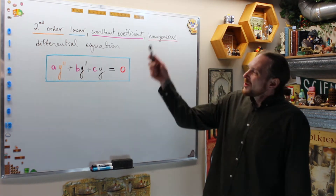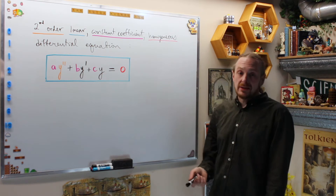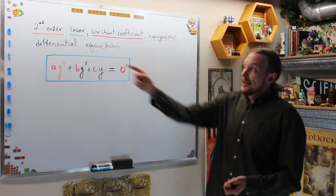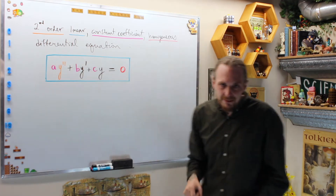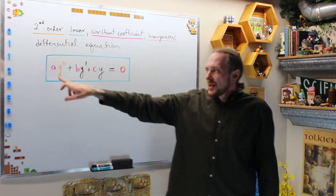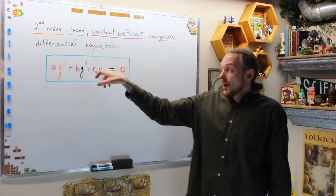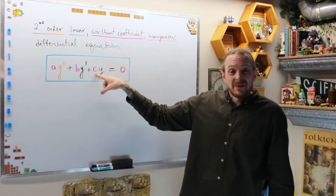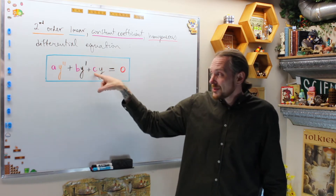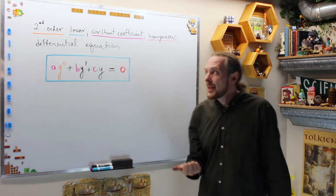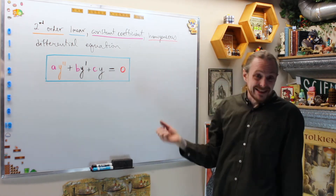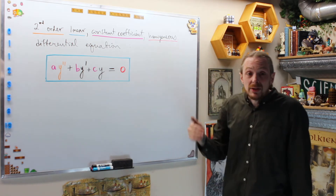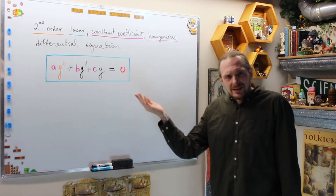We have second order linear constant coefficient homogeneous differential equations. I've color-coded it so you can piece out what's happening. Orange says second order — the highest derivative appearing is the second derivative. Linear means every term is either a function of just x, or a function of x times exactly one of y or one of its derivatives. Constant coefficient means those functions are all constants or real numbers. Homogeneous means f(x) equals zero. Differential equation means we have y and its derivatives present.